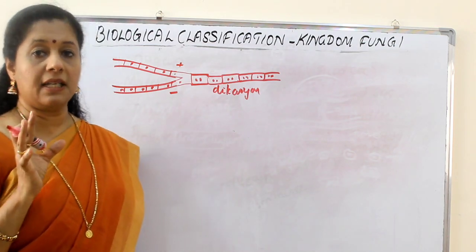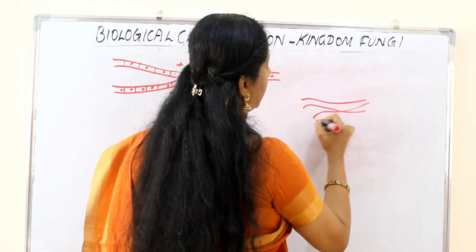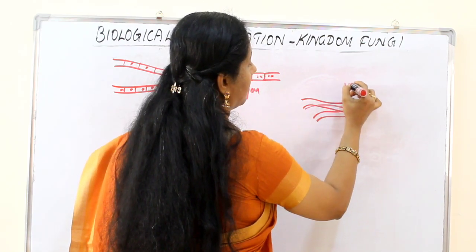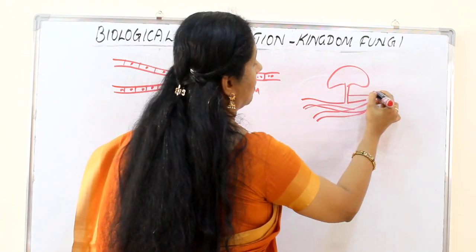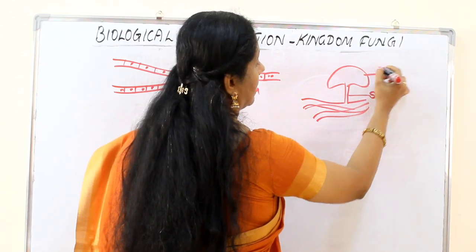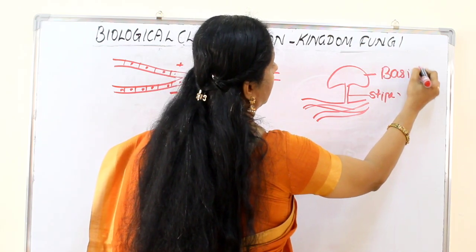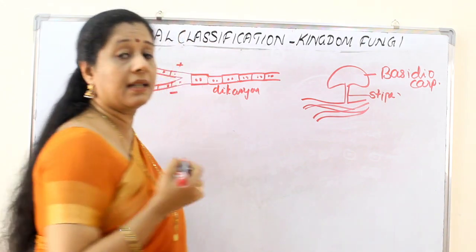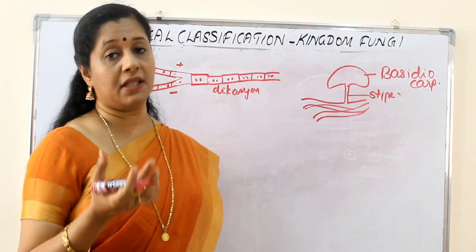From this dikaryon mycelium, a fruiting body develops — like our mushroom. The stalk part is called the stipe, and the total structure is called a basidiocarp. 'Carp' means fruiting body. Since it is basidiomycete mycelium, the fruiting body is called a basidiocarp.